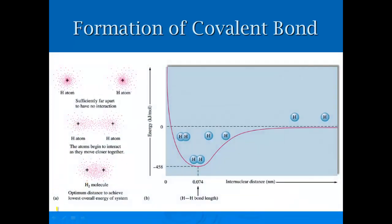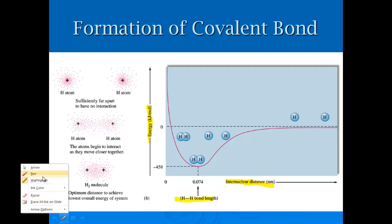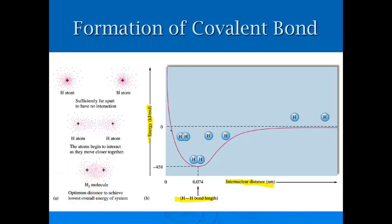For the formation of a covalent bond, you have energy on the y-axis and internuclear distance on the x-axis. There is a way to get to what's called the bond length — the happy medium where these form. You have to look at repulsive and attractive forces, and it's kind of like Goldilocks and the Three Bears.